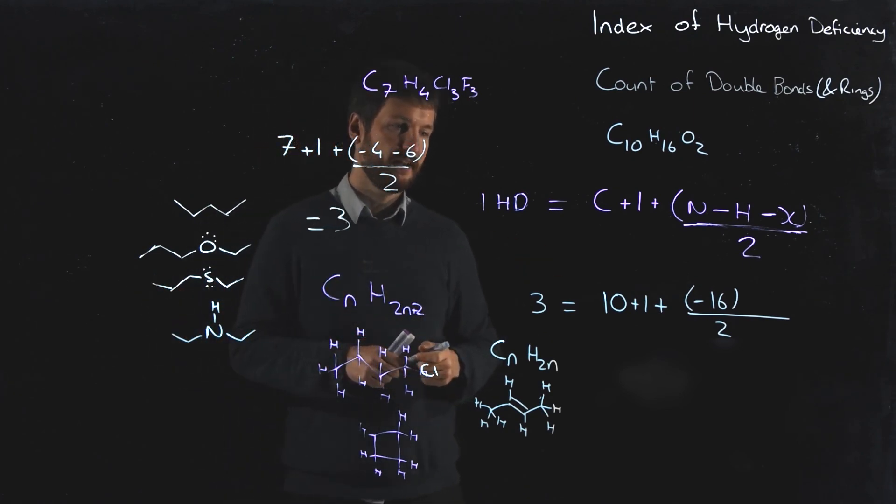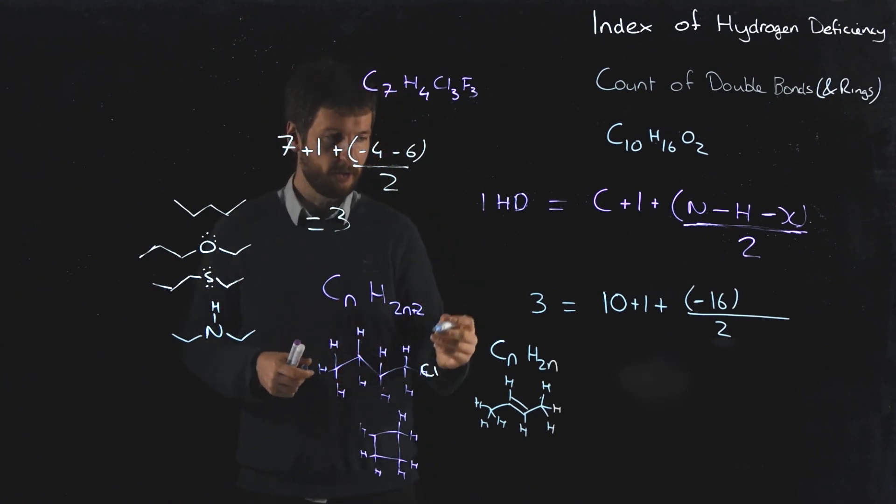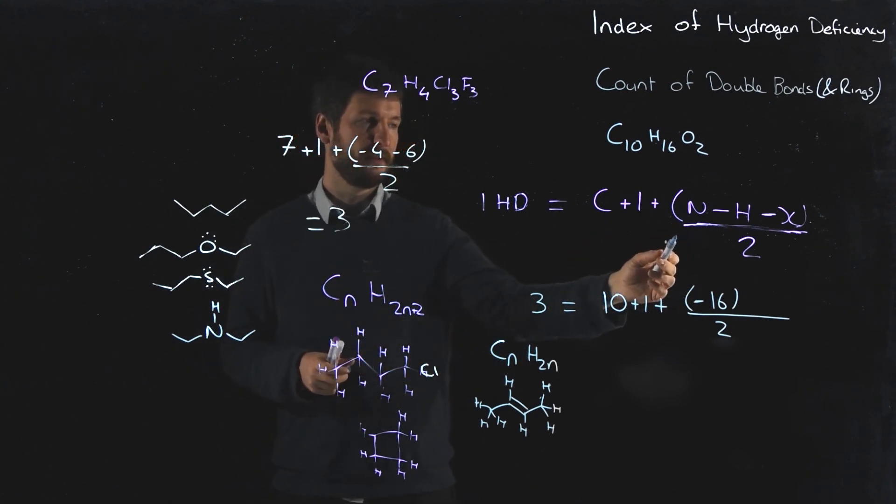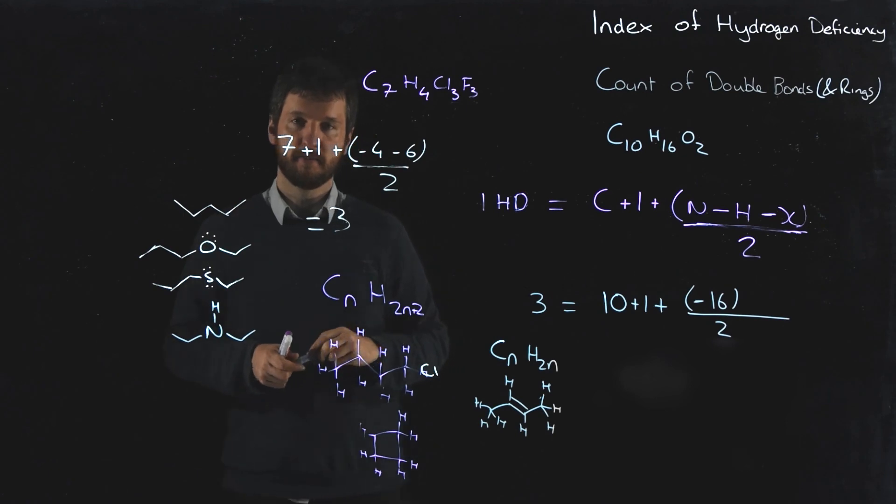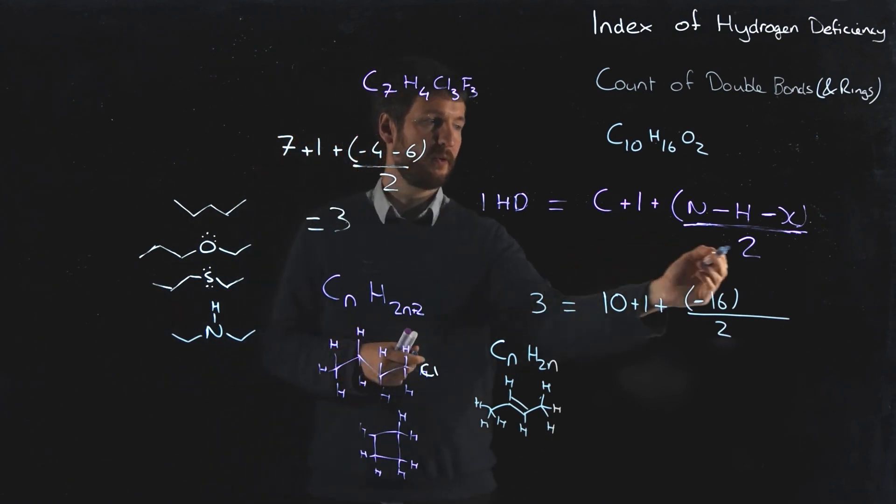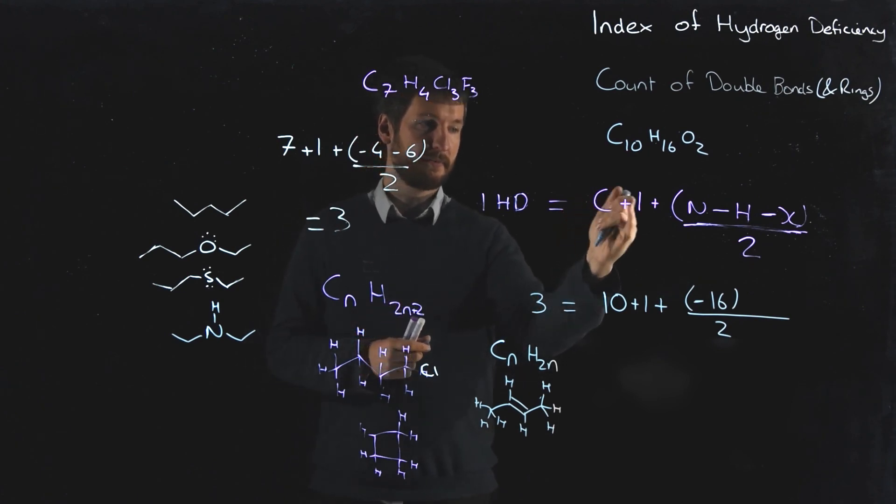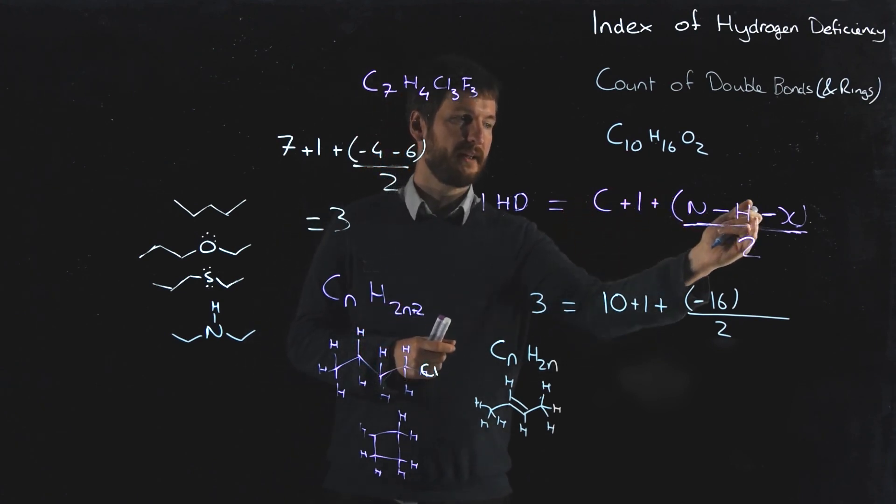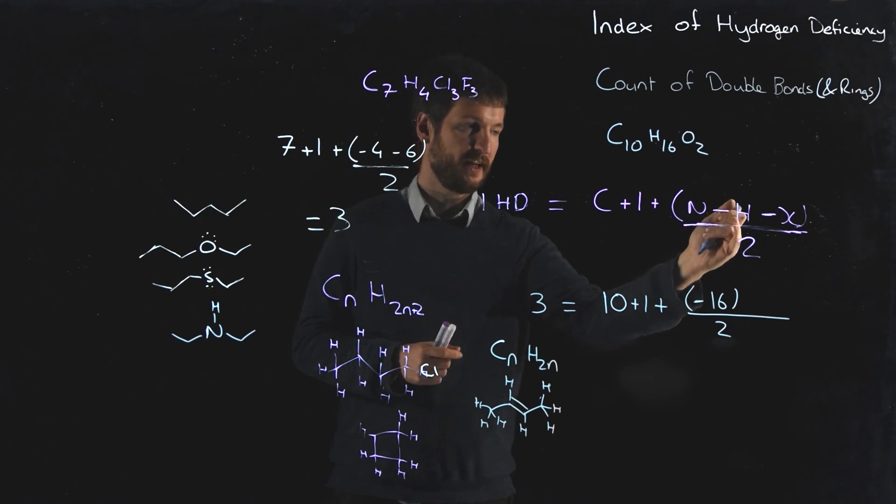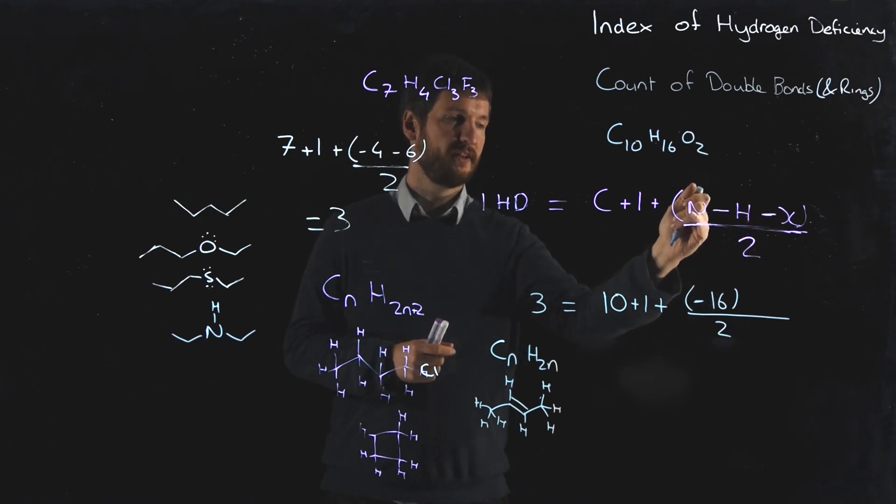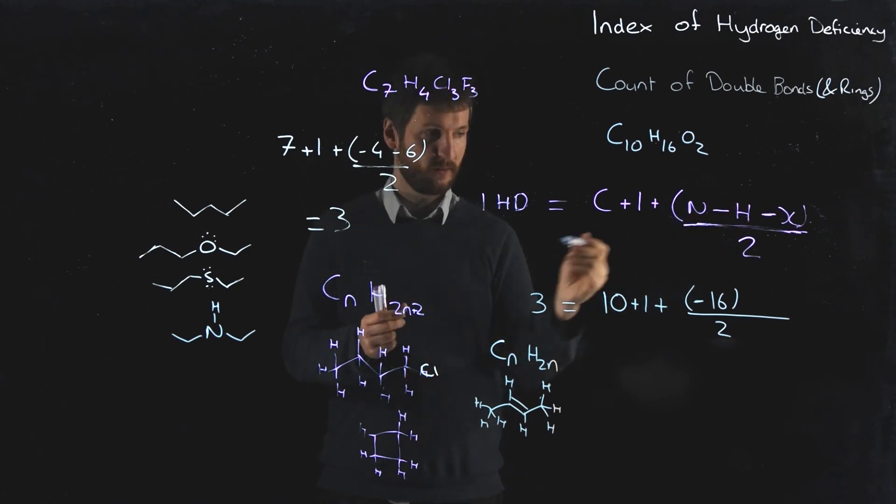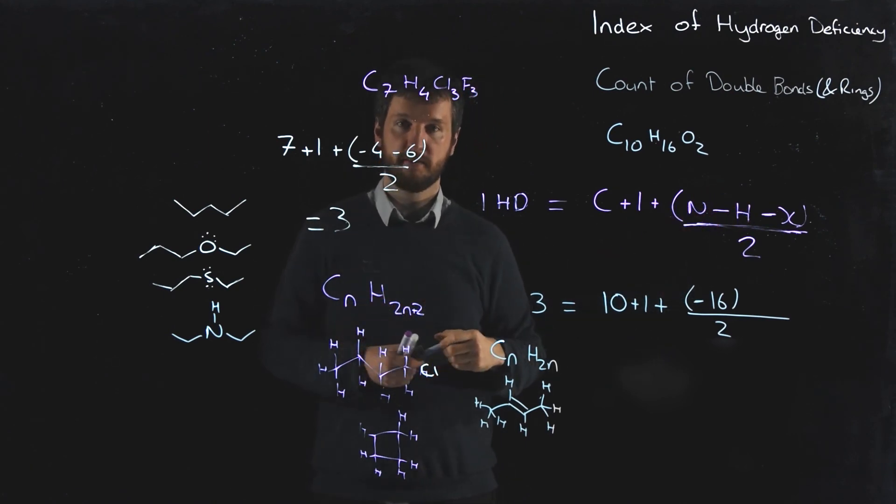So that hopefully explains where this formula comes from. You can think about it in a little bit more depth if you need to, but what's important for us this year is that you can use this formula: the number of carbons plus one minus the number of hydrogens and the number of halogens, divided by two. And if there's a nitrogen, well then you have to subtract one hydrogen for each nitrogen in the molecule. That's all for now.